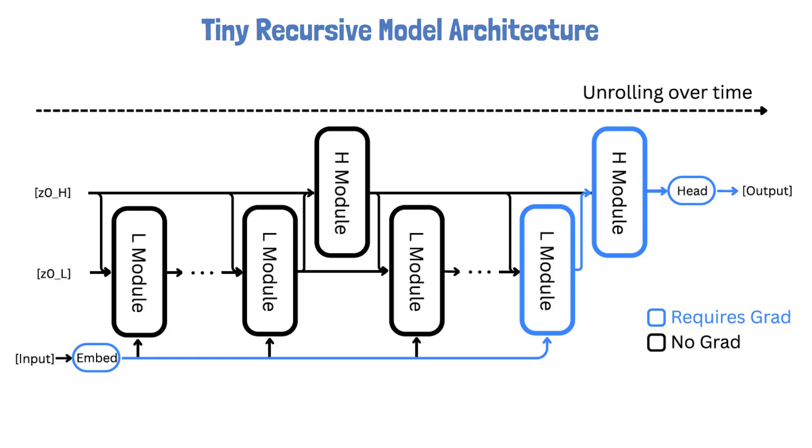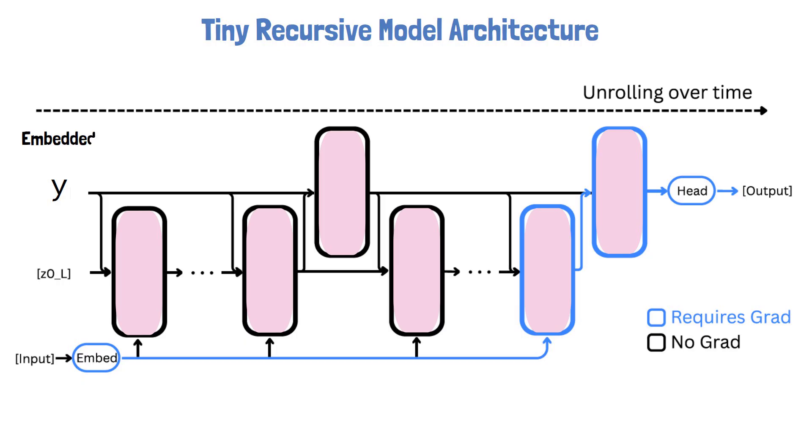The Tiny Recursive Model simplifies this by using a single module that learns to handle both roles. Note that although the diagram shows multiple boxes, they all share the same weights. It's a single module applied repeatedly to refine the reasoning. The names of the latent features change as well. Instead of zh, which represented the latent features of the high-level module, we now have y, which represents the embedding of the current solution. We'll see that it is refined by the model until it's finally used to project the output. Instead of zl, which represented the latent features of the low-level module, we now have z, which represents the model's latent reasoning.